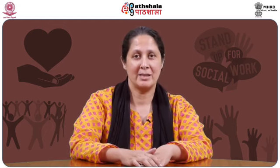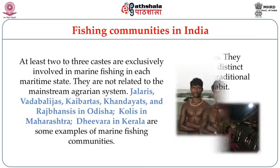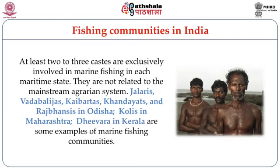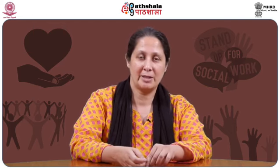Fishing communities in India are not homogenous. They belong to different castes and have distinct traditional practices and structures of social and cultural governance. Kohlis and Bhois are fishing communities of Maharashtra; Dhiwara is a fishing caste in Kerala; Gangota in Bihar; and Manji and Pahadiya in Jharkhand. The Malla caste in North India cultivated a special plant called Makhana, which grows in ponds. Communities collected its seeds from underwater and produced a highly nutritional kind of popcorn from it. They also practice seasonal small-scale fish culture in the Terai plains and Himalayan foothills.